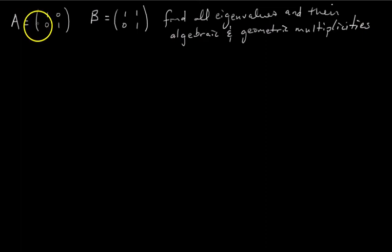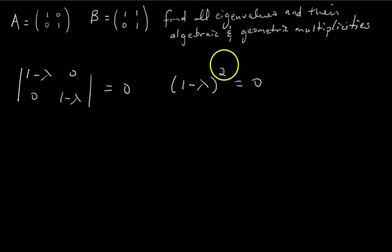So let's find the algebraic multiplicity of each eigenvalue of A first. So for A, we want to find the determinant of A minus lambda I. That's how we're going to find our eigenvalues. So we have 1 minus lambda, 0, 0, 1 minus lambda. We set that equal to 0. And then our characteristic polynomial would be 1 minus lambda squared equals 0.